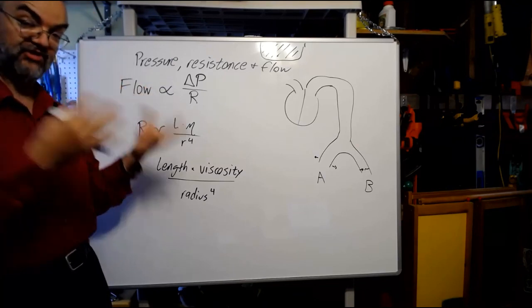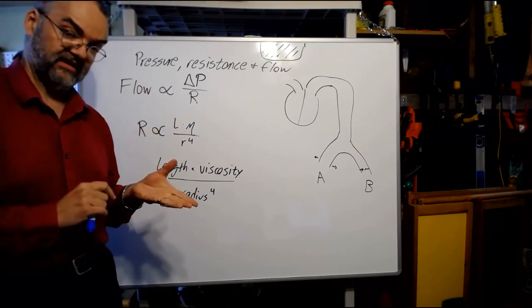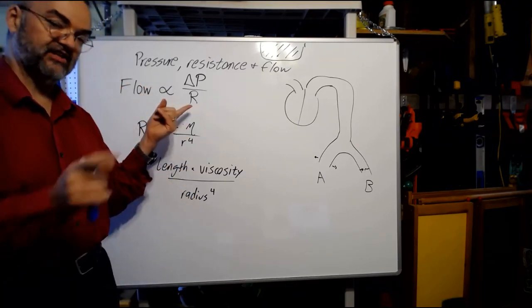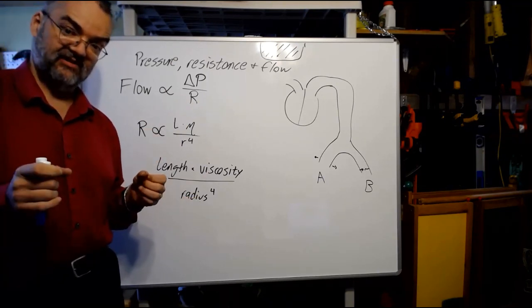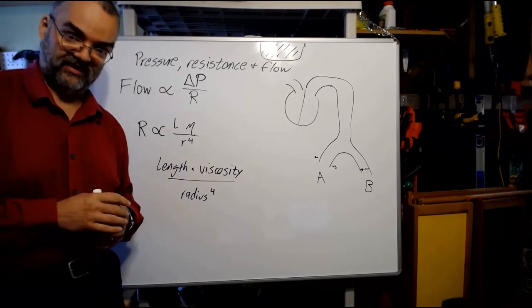We apply pressure with the heart and with arteries. We'll get to that. And then we adjust flow to individual places, mostly based on differences in radius, by dilating or constricting certain vessels.